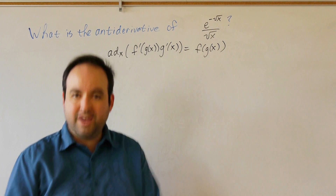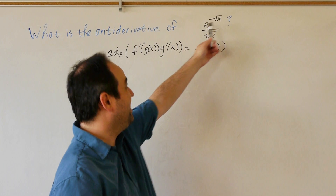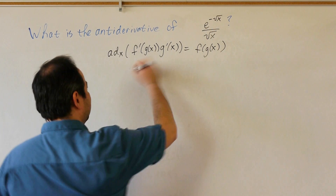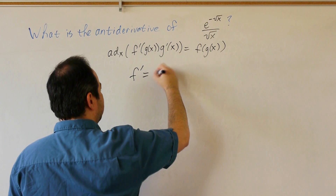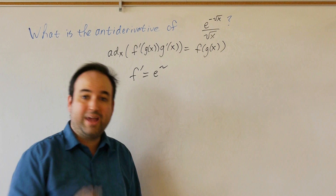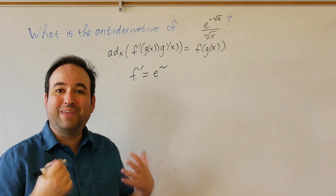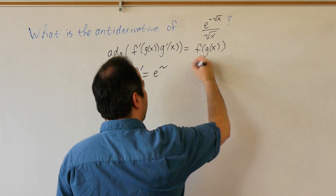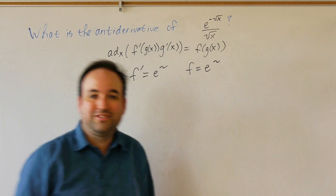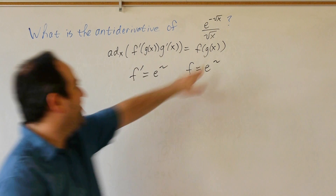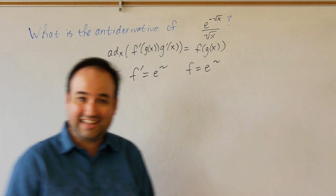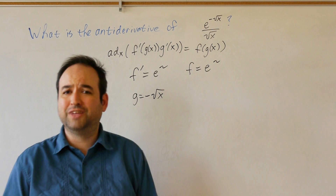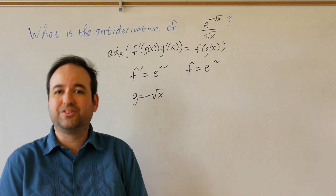When we have a function of another function — like e being raised to a function of x — the outermost function is our f prime. Here, f prime is the function that takes its argument and raises e to that power. When we antidifferentiate the exponentiation function, we just get the function back, so f is also e raised to a power. The inside function g is the function applied to x — in this case, g equals negative square root of x. Once we know g, apply differentiation rules to find g prime.